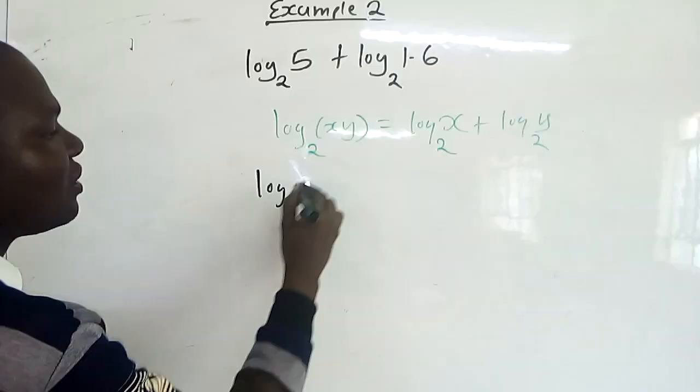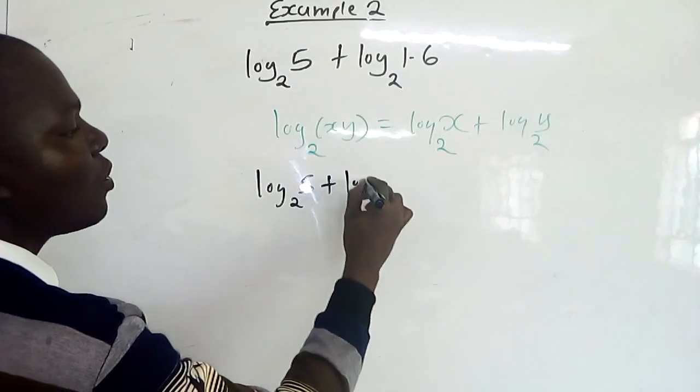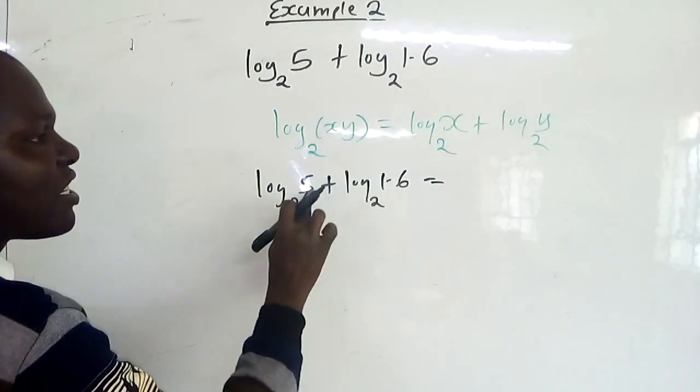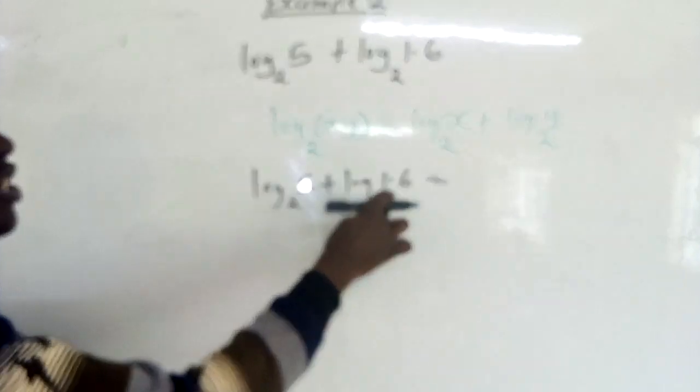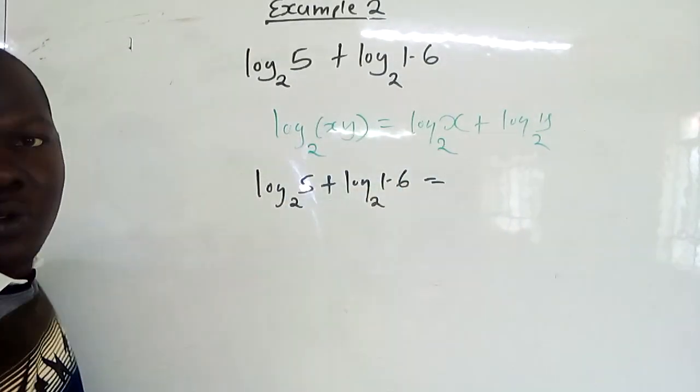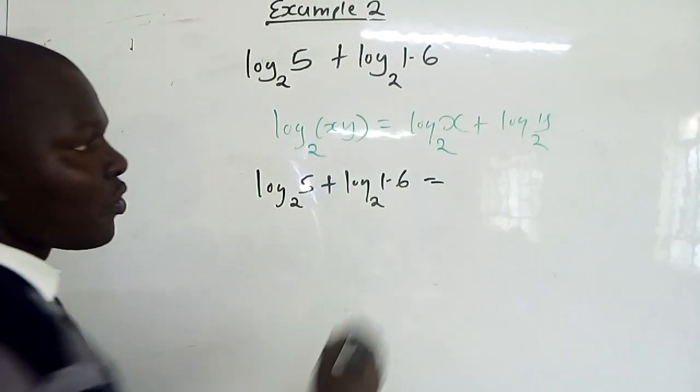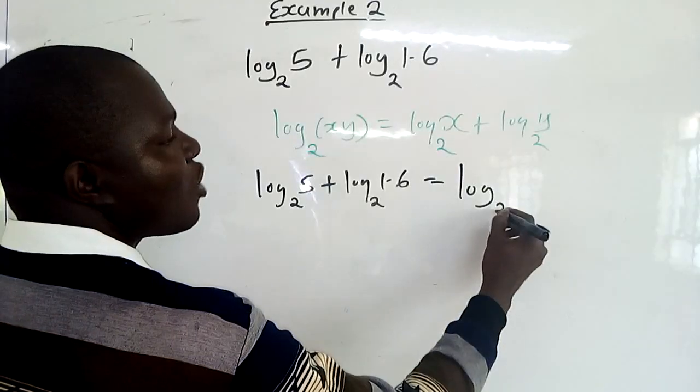We've been given log₂5 plus log₂1.6. You can see our x is 5, our y is 1.6. Then we get log of x times y, 5 times 1.6, because of the addition sign in between them. So we factorize out our log to base 2.